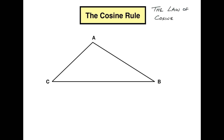The other very important thing to remember, just like the sine rule, this is only reserved for non-right triangles. You cannot use this with right triangles. And why would you want to? If you've got a right triangle, you just use SOHCAHTOA. So remember, only for non-right triangles.